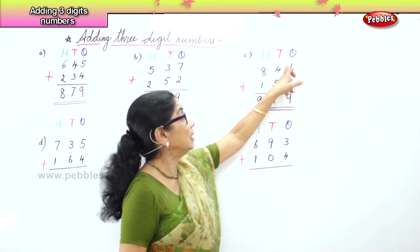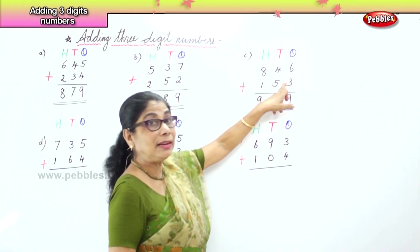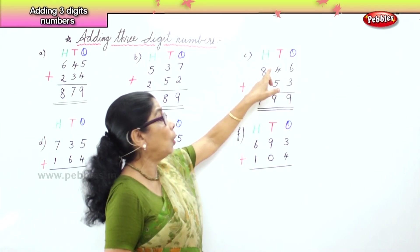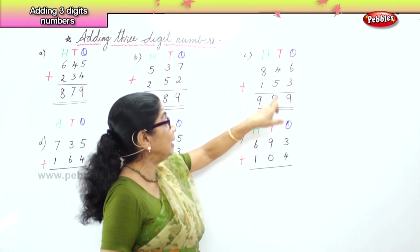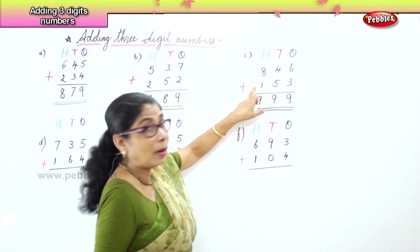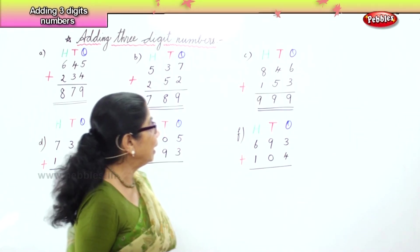What is six ones and three ones? Nine ones. What is four tens and five tens? Nine tens. What is eight hundred and one hundred? Nine hundred. Very good.